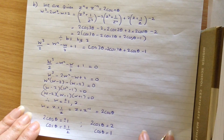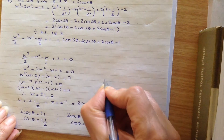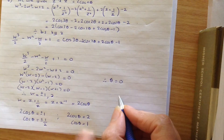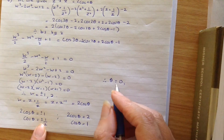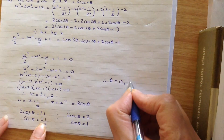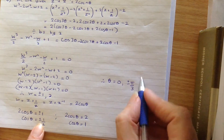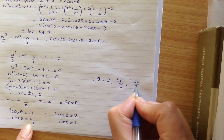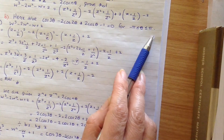The solutions for theta are: theta equals 0, because cos 0 equals 1, and also plus or minus pi over 3, and plus or minus 2 pi over 3, since we want all angles between minus pi and pi.